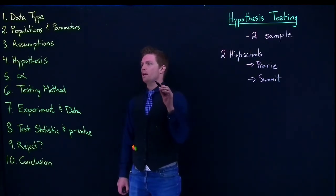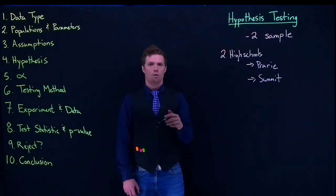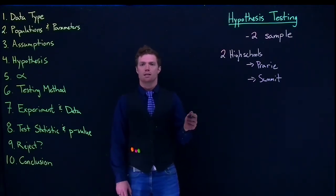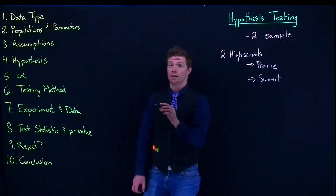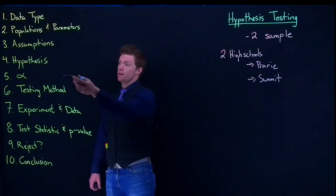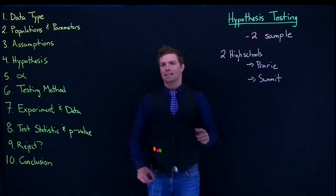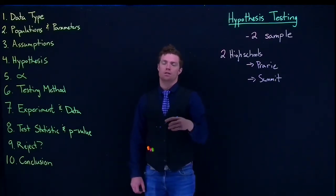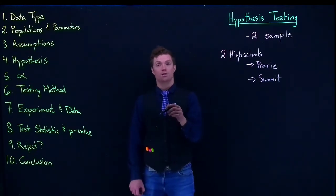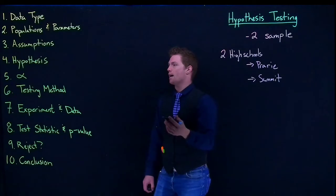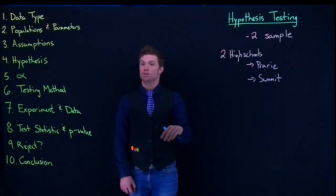I'm going to spend another separate video just covering how to write these hypotheses for both our categorical and numerical scenarios. Then we've got to establish our alpha value. Now alpha is exactly the same. It still represents the percent of the time that we are going to be rejecting the null hypothesis when the null hypothesis is in fact true. The nice thing is it's the same between one sample and two sample.